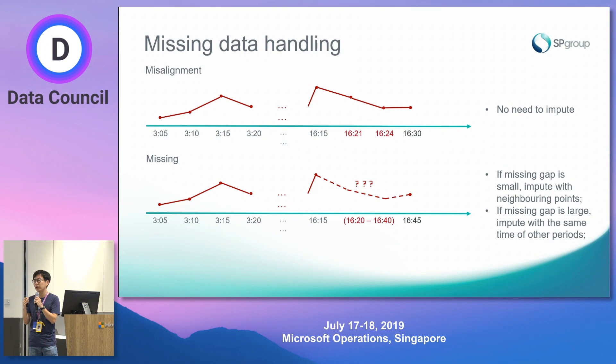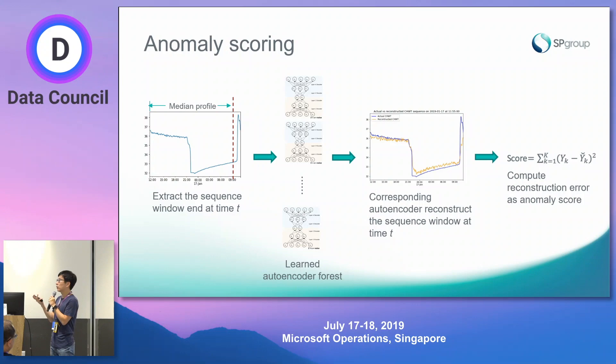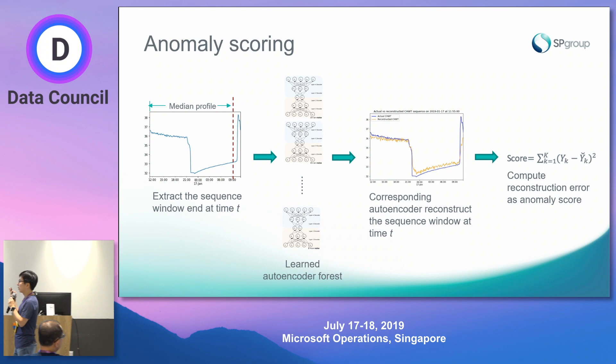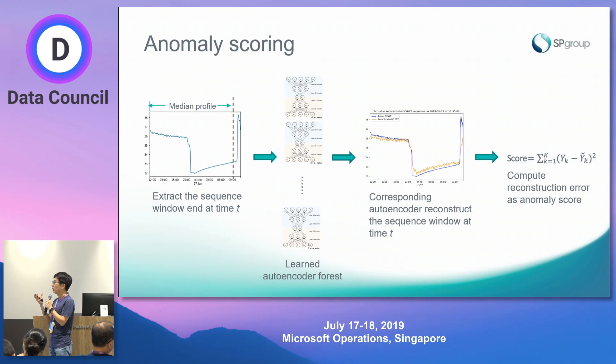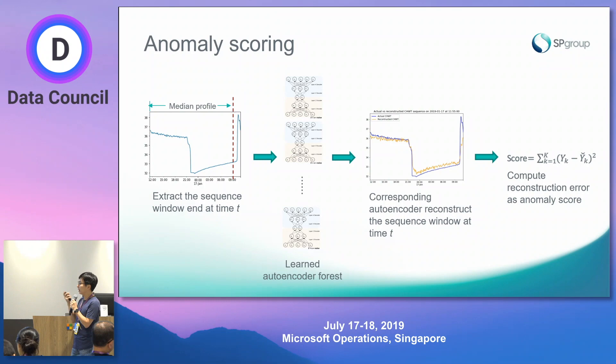For the anomaly score, we use a rolling window from the test data but do not score the whole window. The first portion is filled with the median profile, and only the last key points are actual values. When this is passed into the trained Autoencoder Forest, a specific autoencoder is selected to reconstruct the sequence, and the Euclidean distance between the reconstructed and actual last key points is computed as the reconstruction error and anomaly score.